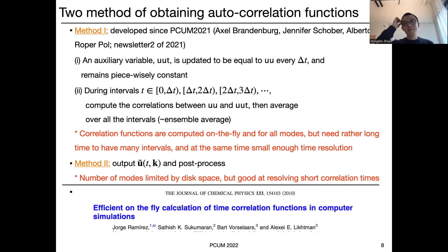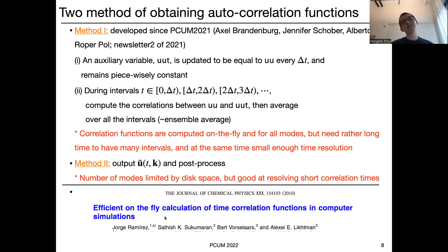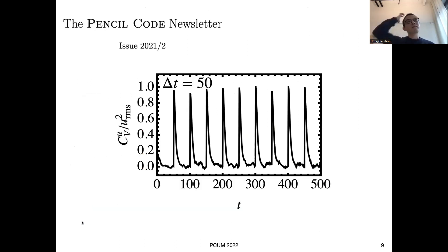The second method is more straightforward: output the Fourier modes of the velocity field and do the correlation in post-processing. Since we can do a convolution on the time series, it is good at resolving very short correlation timescales even if the output time interval is not very long. I also want to mention a paper from a different community which gives a new algorithm for computing correlation functions on the fly at somewhat lower cost, using locally time-averaged correlation functions to approximate the real correlation function while controlling the error.